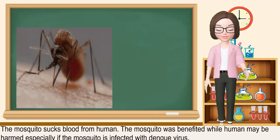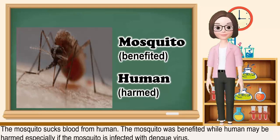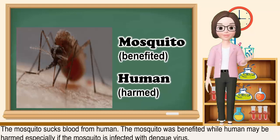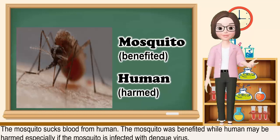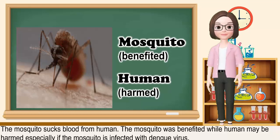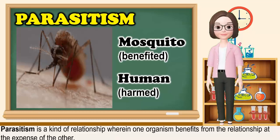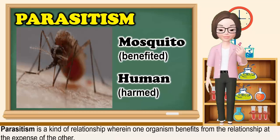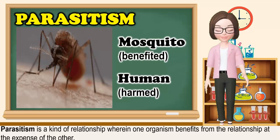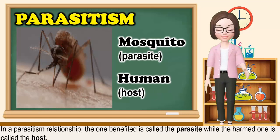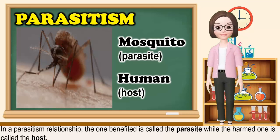Take a look at this picture. What can you see? Very good! The mosquito is sucking blood from a human. The mosquito is benefited while the human may be harmed, especially if the mosquito is infected with dengue virus. This is called parasitism. Parasitism is a kind of relationship wherein one organism benefits from the relationship at the expense of the other. In a parasitism relationship, the one benefited is called the parasite, while the harmed one is called the host.